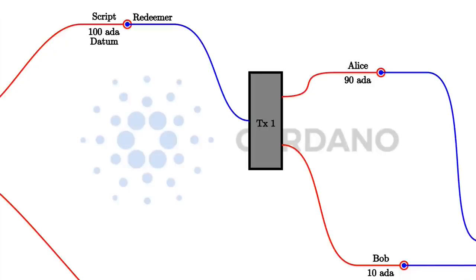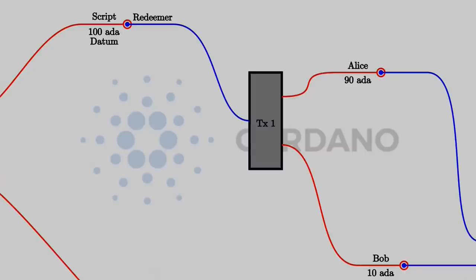In a concrete implementation like Plutus, these three pieces of data have to be represented by some concrete Haskell data type. The choice was made to use the same data type for all three of them, at least at the low level implementation of Plutus. We'll look at that first, but in real life nobody would actually use this low level - there are more convenient ways to use more suitable data types for these things. But first I want to talk about this low level implementation of validation, where datum, redeemer and context all use the same Haskell data type.